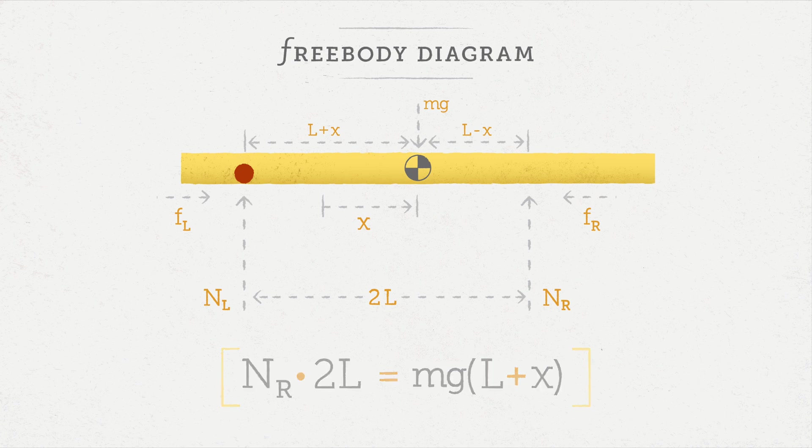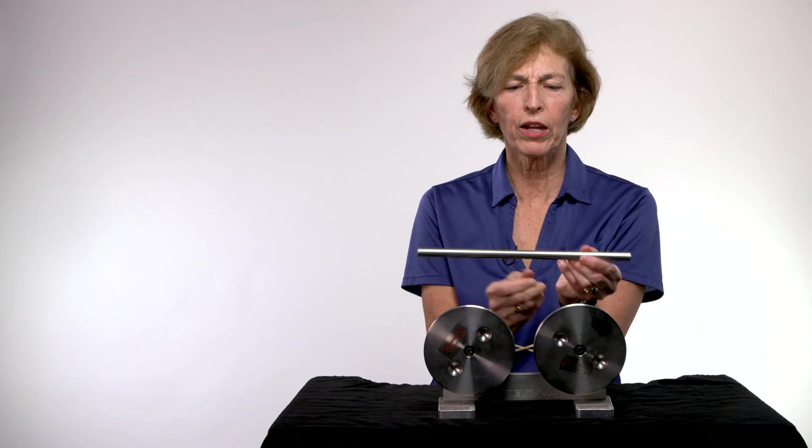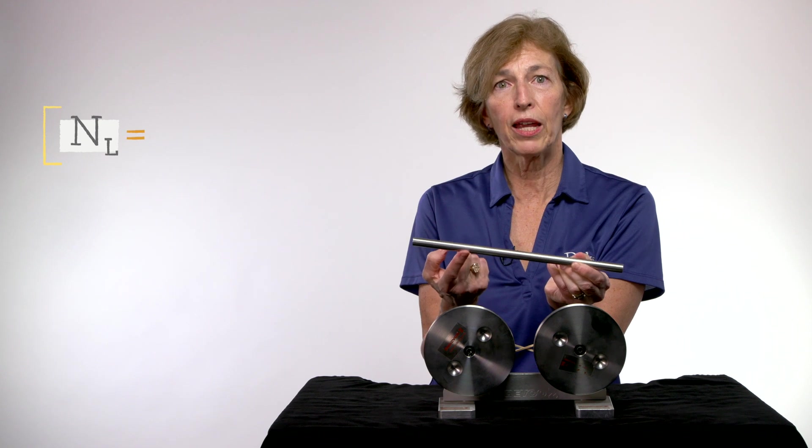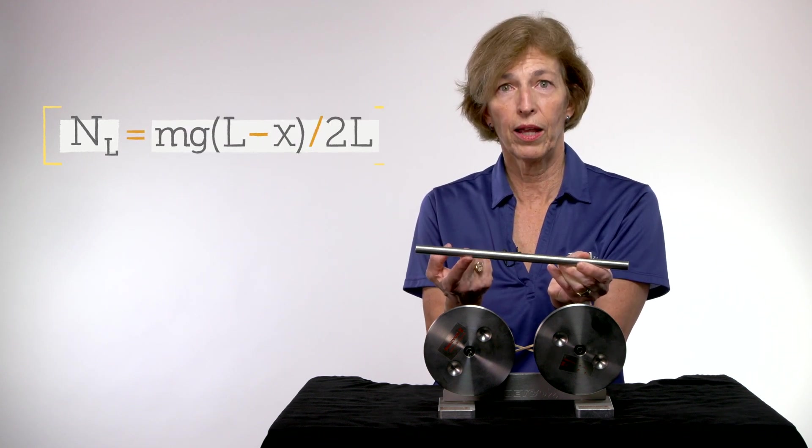That means that nR times this distance 2L must be equal to the mg times the distance L plus X. So then if I solve that for nR, that means that nR is equal to mg times L plus X divided by 2L. And I can do the same thing over here, and I would find out that nL is equal to mg times L minus X over 2L.